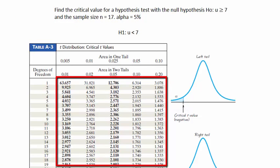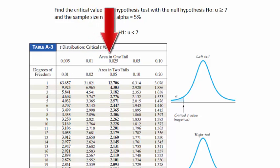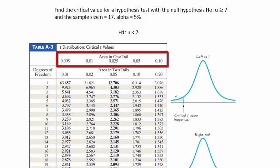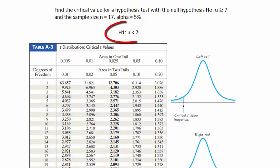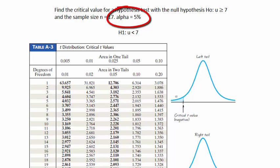The answer to our problem lies in the body of the table entitled t-distribution critical t-values. First, we need to decide which column of the table we'll be using. We need to know if this alpha is an area in one or two tails, and if it is an area in one tail, is it in the left tail or in the right tail? Since the symbol in the alternative hypothesis points to the left, we know that this is a left-tail test, which means that the critical value t is going to be negative.